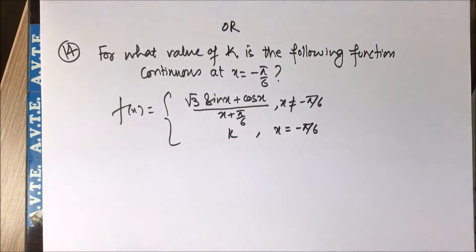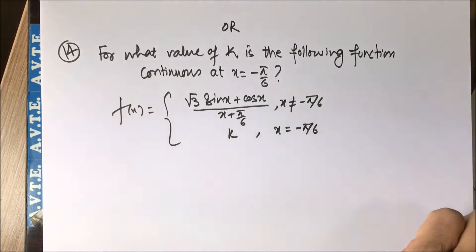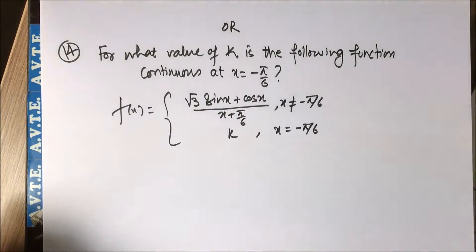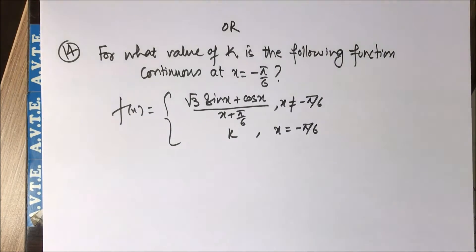For what value of k is the following function continuous at x equal to minus pi by 6? You are given two branches. What you have to do in this question is calculate the left-hand limit and right-hand limit and individually put them equal to the functional value, because it is already given that the function is continuous. But because it's a long expression and many students are scared of trigonometry...